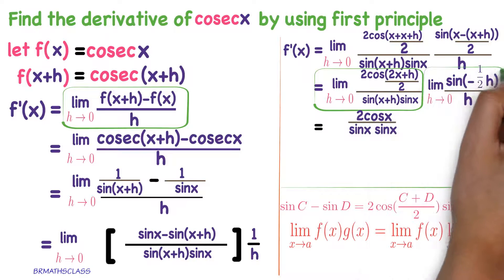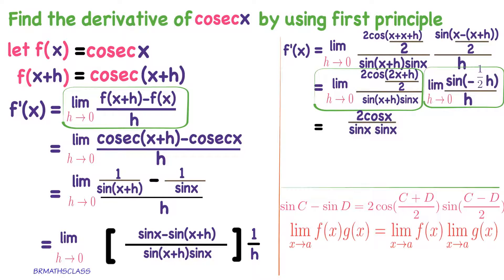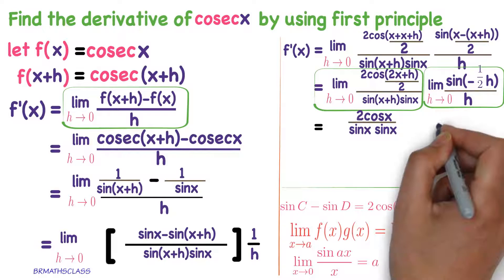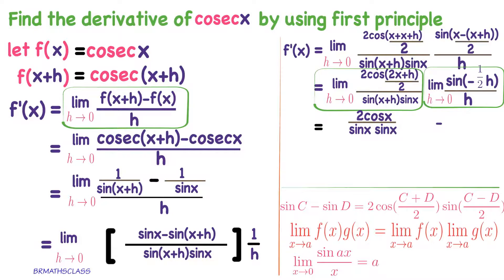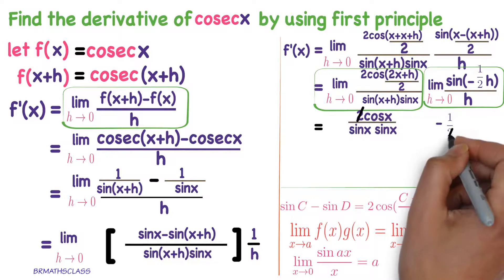If we apply limit to this part, it looks like this formula form. Observe here. Limit x tends to 0, sin ax divided by x equal to a. So, what is a here? A is minus 1 by 2. Now, in the numerator 2 and the denominator 2 will get cancelled.